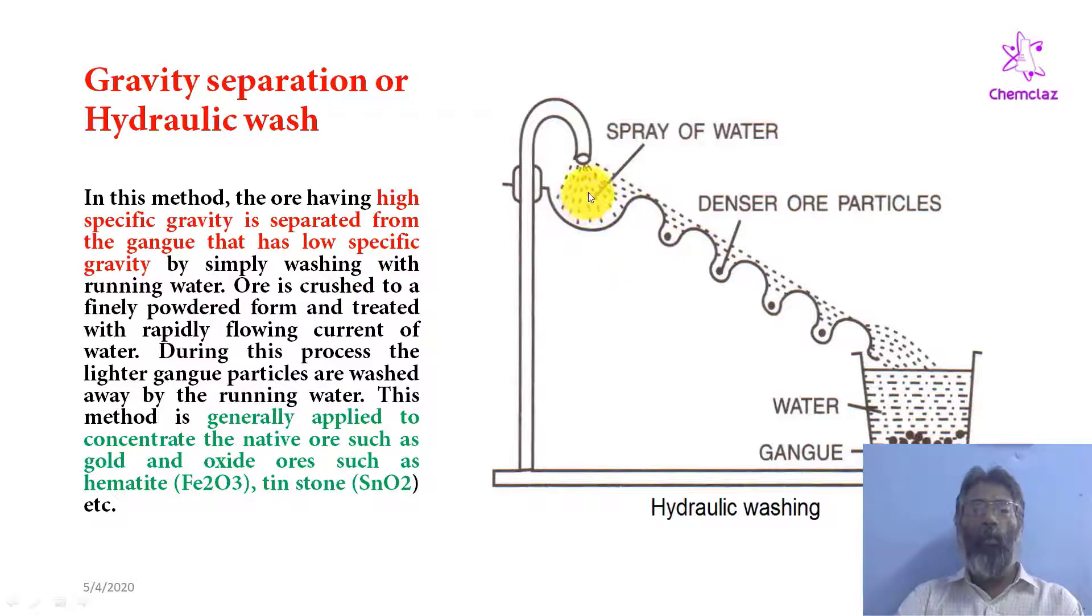You have to powder the ore containing gang particles. This one is called sloping heart. At the top of the sloping heart you have to wash the ore.